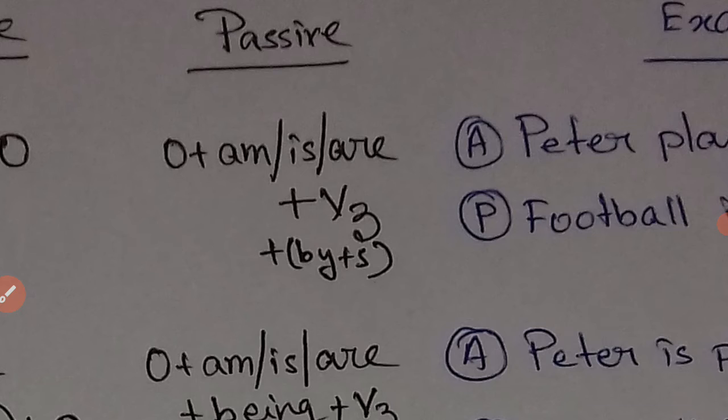In this particular case of present indefinite tense, the passive formula is Object plus am/is/are. You need to choose according to the subject. If the subject is I, you choose 'am.' If the subject is singular, you choose 'is.' If the subject is plural, you choose 'are.' Then Object plus am/is/are plus V3. V3 refers to the third form of the verb, which means past participle. After writing V3, you have to write 'by,' and after 'by' comes the subject.